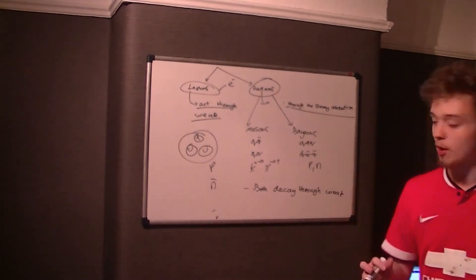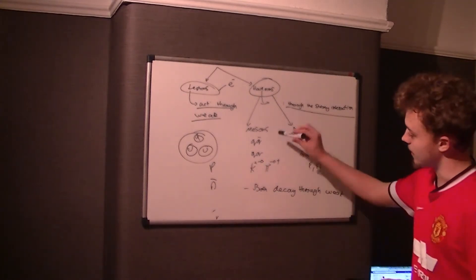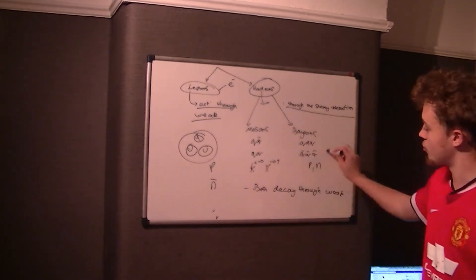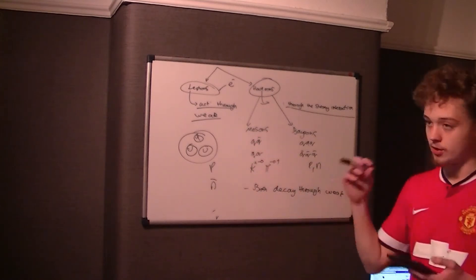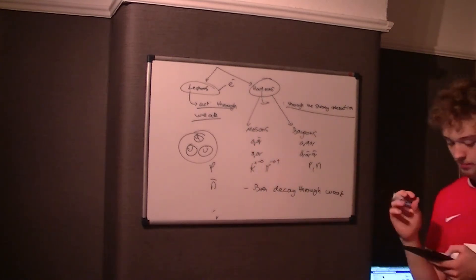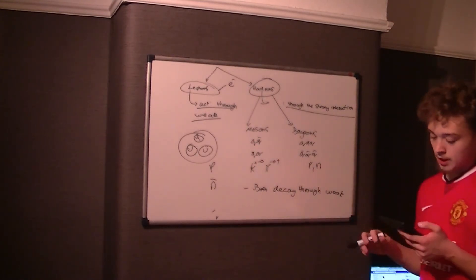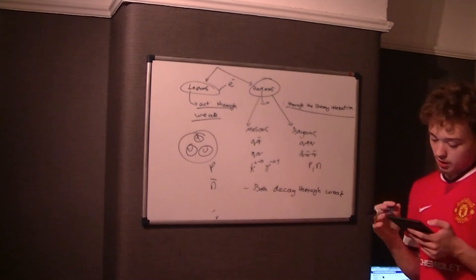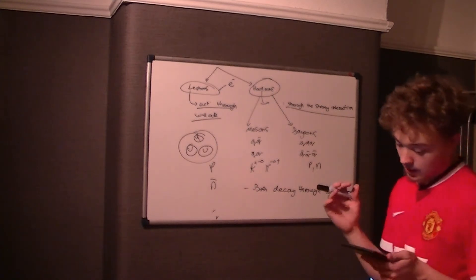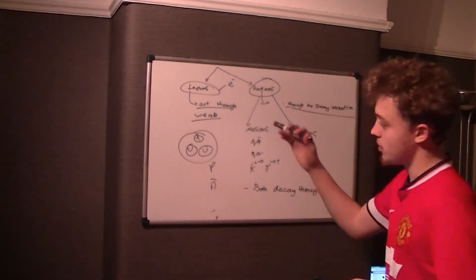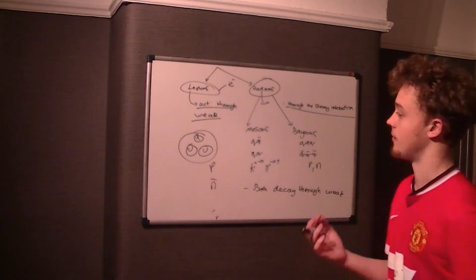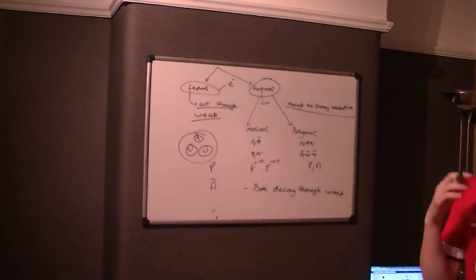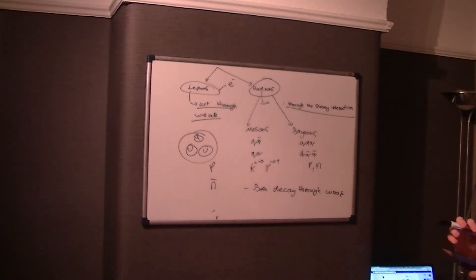To get six marks, let's build this up from the ground. The first two marks are for saying leptons are fundamental particles — not made of anything smaller — whereas hadrons are made of quarks. Then you move into the middle band by mentioning the strong nuclear interaction, or just 'strong interaction', which is acceptable.